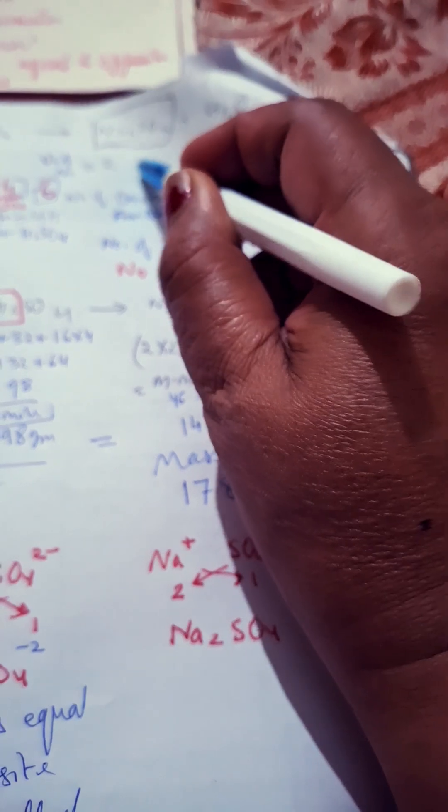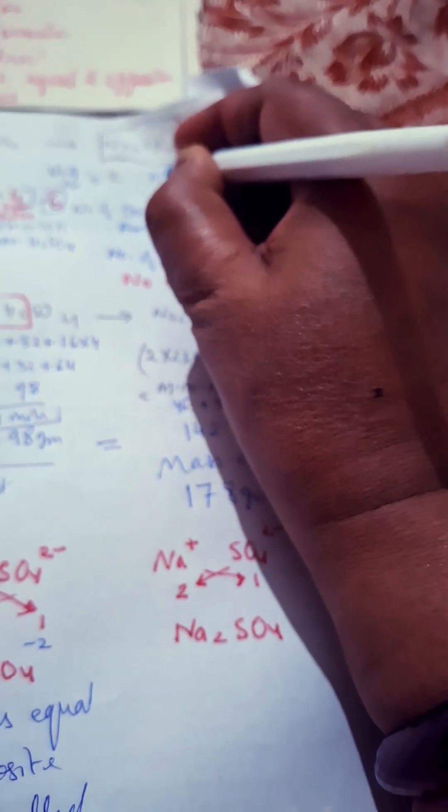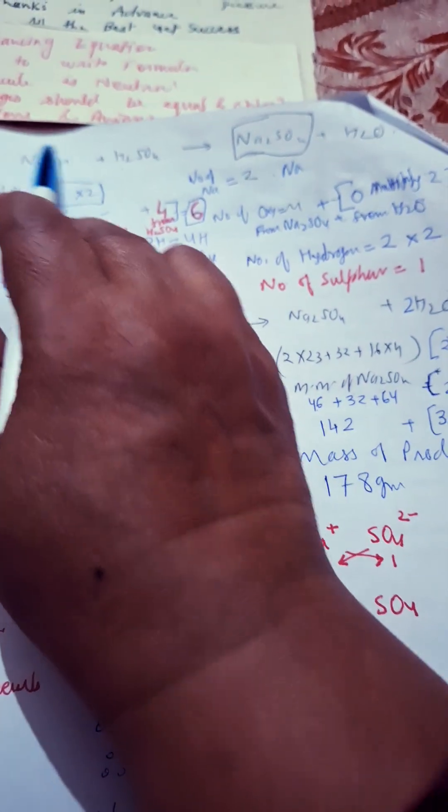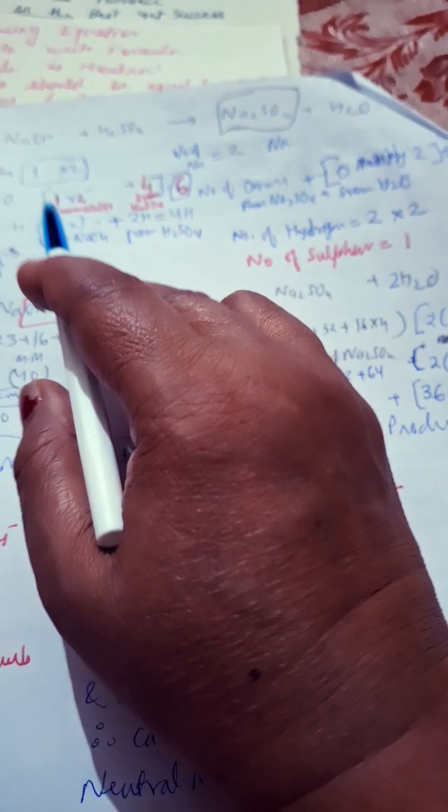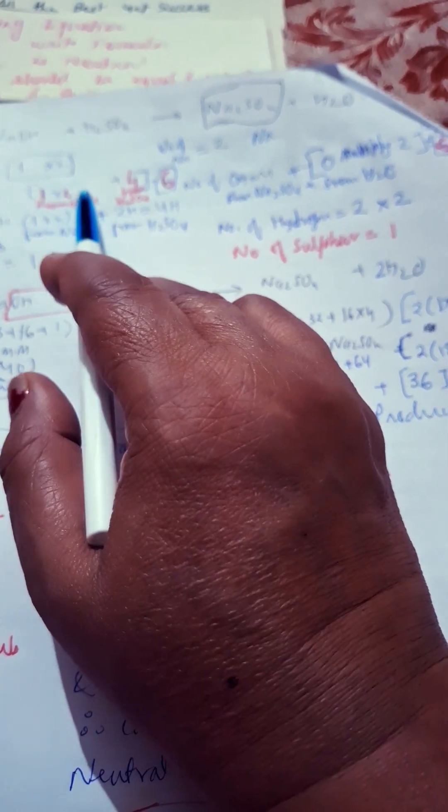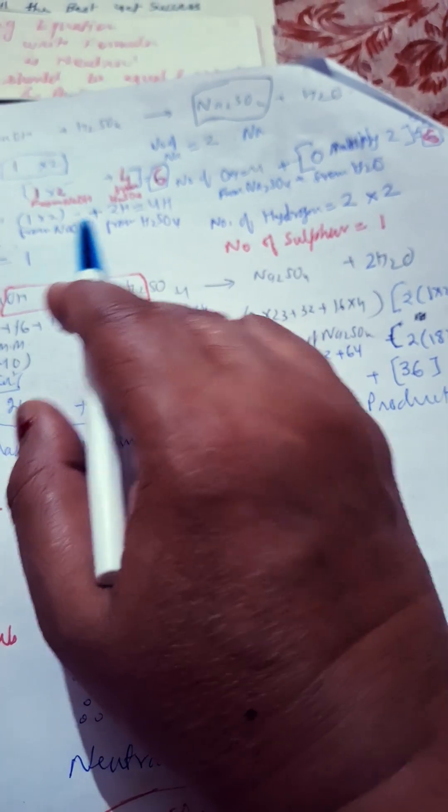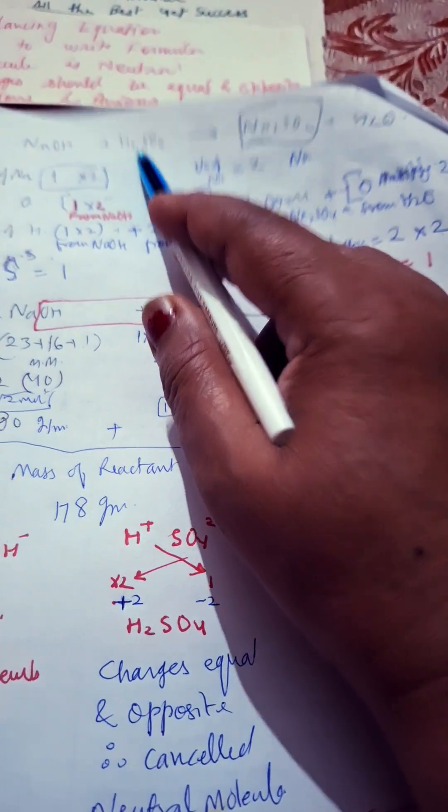So when we will see that Na is two, at the same time we will think that oh, here it is one, so we multiply this by two. So whole will be multiplied by two. So here multiply oxygen one by two, hydrogen one by two. Okay, now total hydrogen here: two plus two equals four. Two from this H2SO4 and two from this.